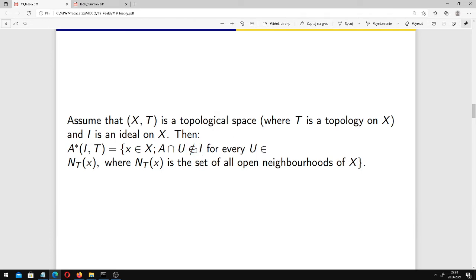Now imagine that we replaced this fragment 'does not belong to the ideal' by 'is not empty'. Then this would be the very definition of closure of A. So A star, local function of A, can be considered as a kind of generalization of the notion of closure.